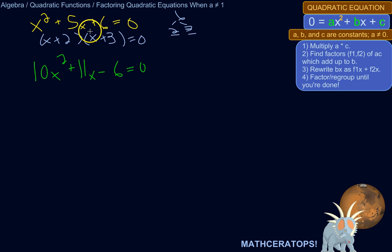It's not so bad, it just involves a few more steps than this case here. So first thing you do is multiply a and c. So 10 times negative 6 equals negative 60. So that's the first thing. a times c.